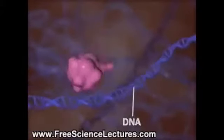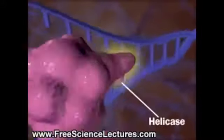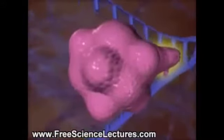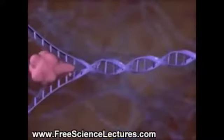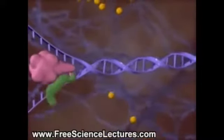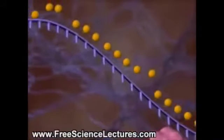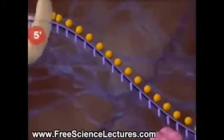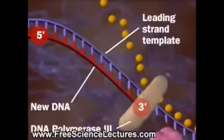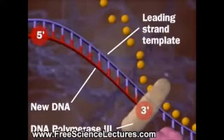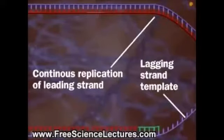When DNA replicates, its strands are separated by the enzyme helicase. Single-stranded DNA binding proteins keep the strands from re-annealing. One DNA strand encodes the leading strand, which forms from its 5' to its 3' end using DNA polymerase 3. No problem here, but the lagging strand presents problems.